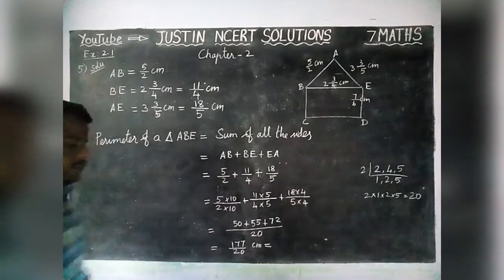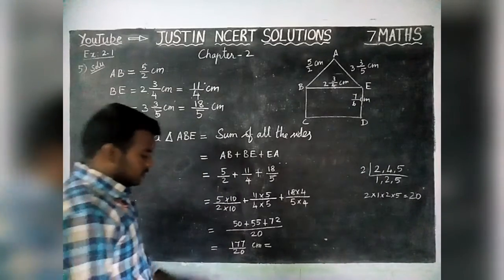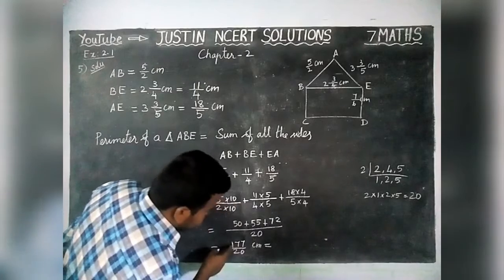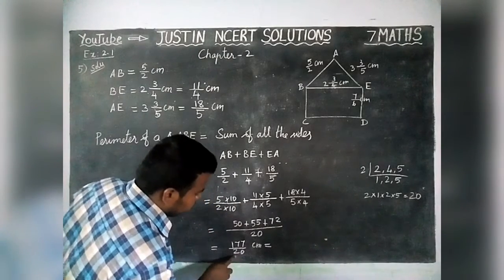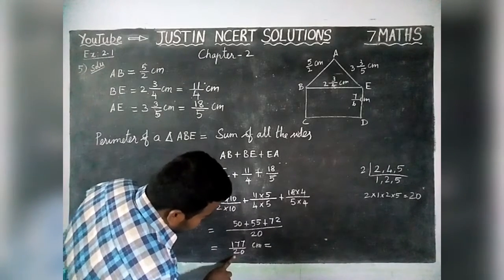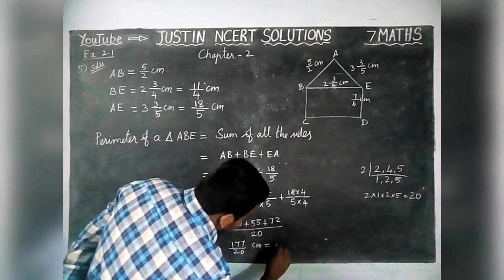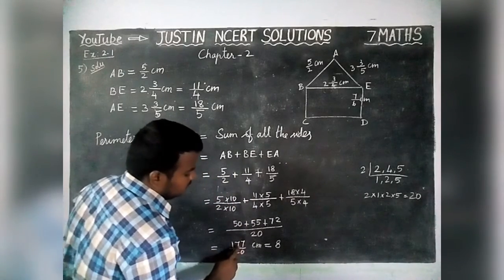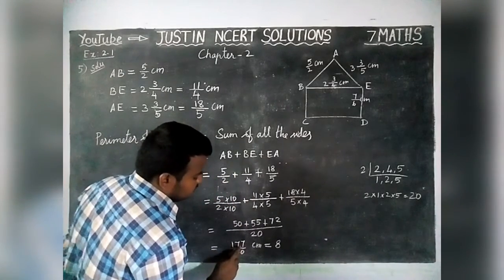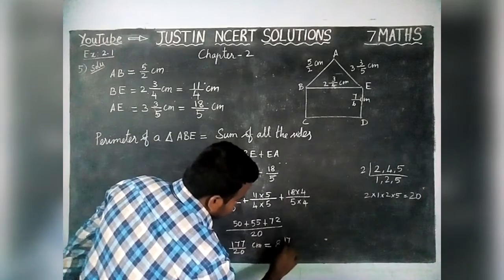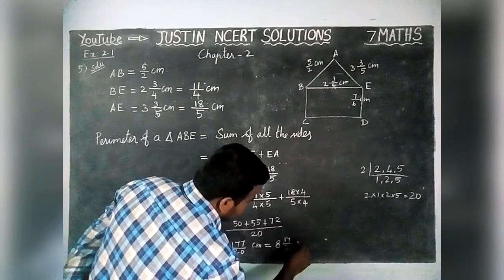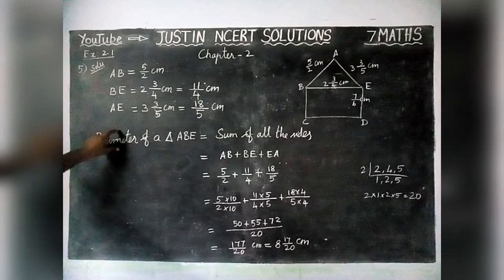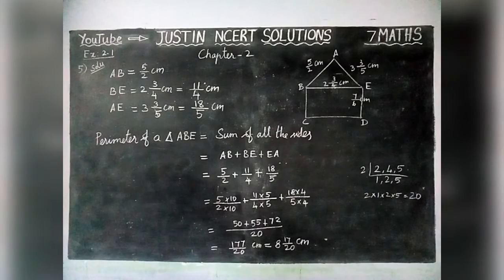This can be written as a mixed number. In 177, there are 8 twenties (8 × 20 = 160), with 17 remaining. So the perimeter of triangle ABE is 8 and 17/20 centimetre.